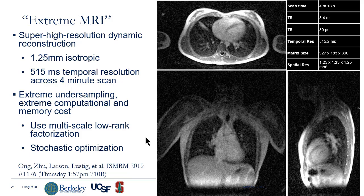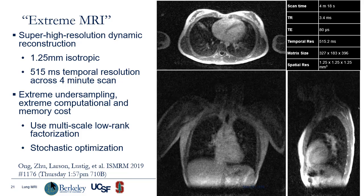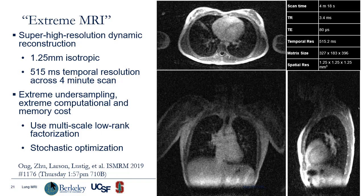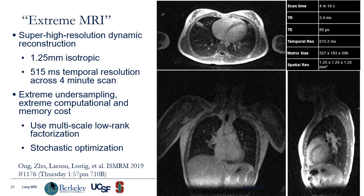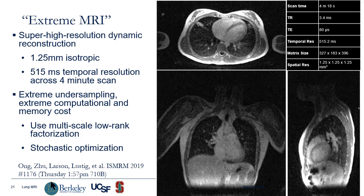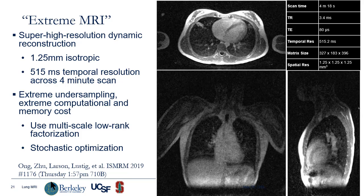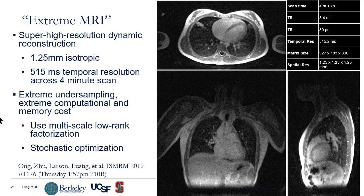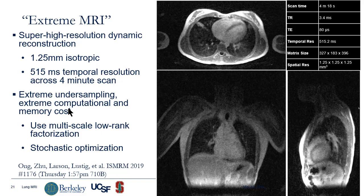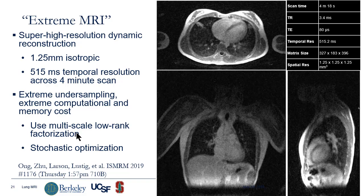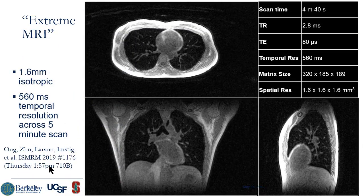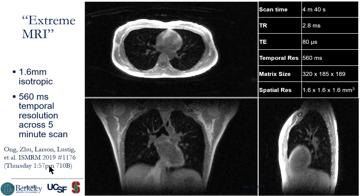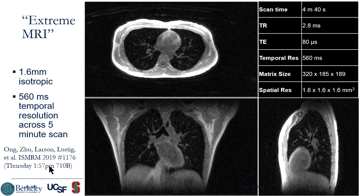The next evolution of this has been work by Frank Ong, who was at Berkeley and is now at Stanford, where he's pushed this idea to the extreme — an idea he's calling Extreme MRI. Instead of just the central k-space data, he uses the full k-space data, trying to reconstruct in a truly dynamic fashion. As you can see in this movie, you can see various breathing patterns, getting high resolution both spatially and temporally with extreme undersampling and clever tricks: a multi-scale low rank reconstruction with stochastic optimization. He's presenting later this afternoon and has lung imaging examples as well as DCE examples. This could be very powerful for managing motion in pulmonary MRI.